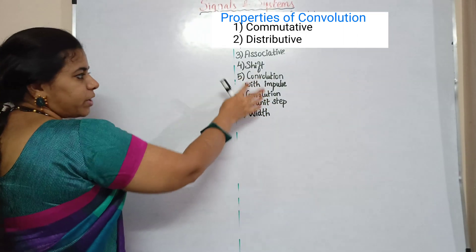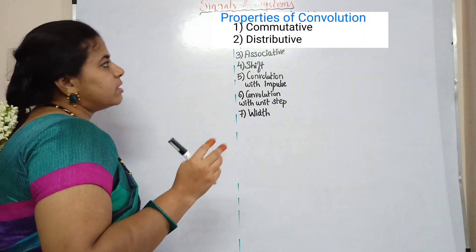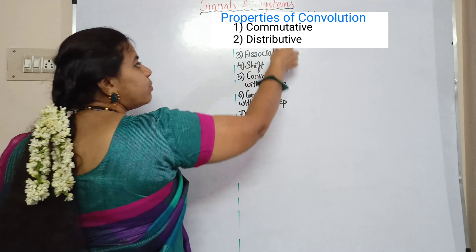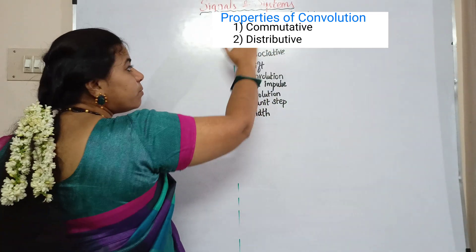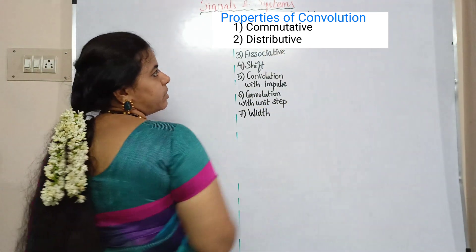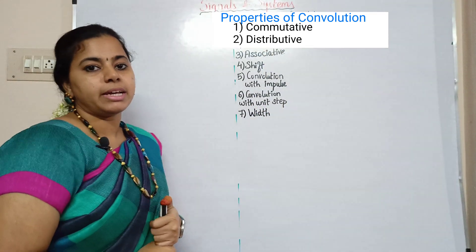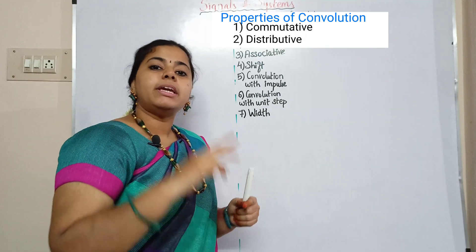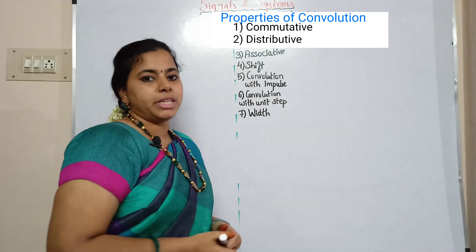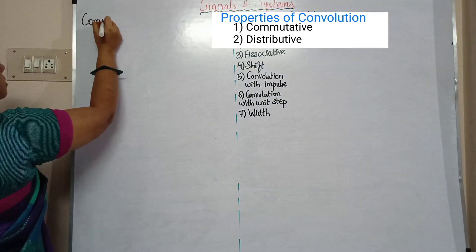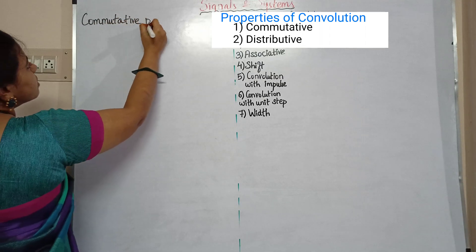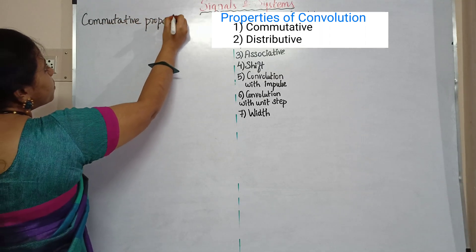I'll tell you two topics, so that's why we discuss all the properties. First, I'll explain the three properties. Commutative properties are already listed in the semester, so write any two properties with proof. You can explain the two properties. So, first: commutative property.